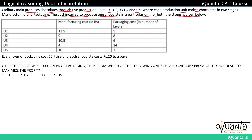If we read this table, we have been given all the units 1 through 5. For unit 1, the manufacturing cost of every chocolate is 12.5 rupees, and the packaging cost — here we have been given the number of layers needed to package one chocolate in U1, which is 5. Similarly in U2, manufacturing cost is 9 rupees and to pack a chocolate we need 8 layers. Every layer of packaging costs 50 paise and each chocolate costs 20 rupees to a buyer.